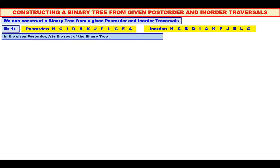Yes, A is the root of the binary tree. We shall make A as the root of the binary tree and we will mark A in inorder also. Now carefully observe the inorder. All the elements to the left of A should be in the left sub-tree, and all the elements to the right of A should be in the right sub-tree.